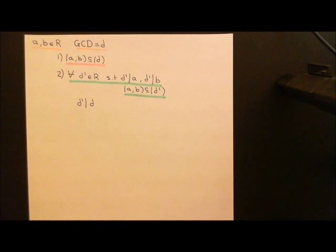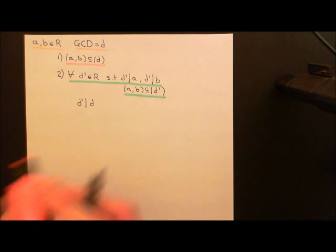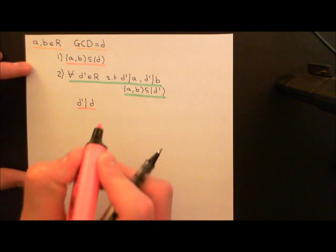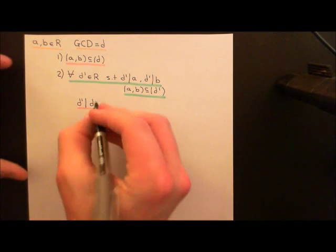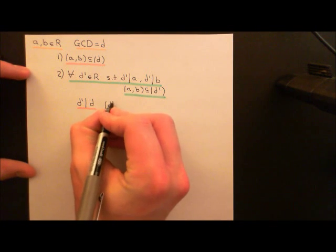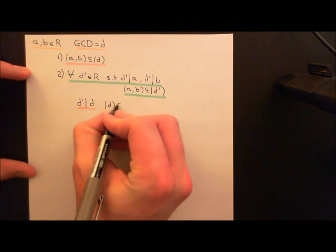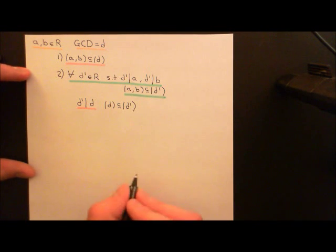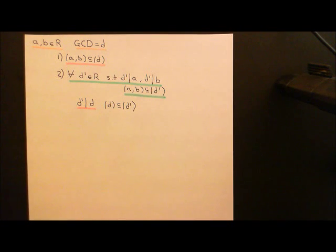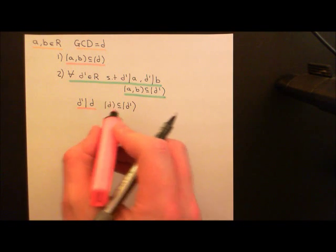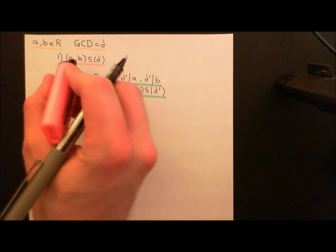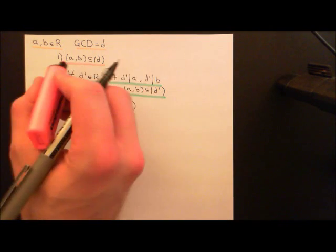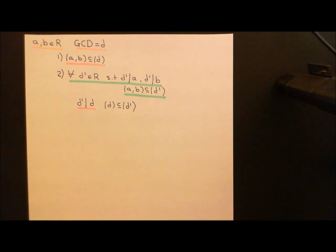And of course, what does it mean for D prime to divide D? It means that D is a multiple of D prime, and therefore the principal ideal generated by D is completely contained within the principal ideal generated by D prime. So the greatest common divisor's principal ideal must be the smallest possible one that contains the ideal generated by A and B.